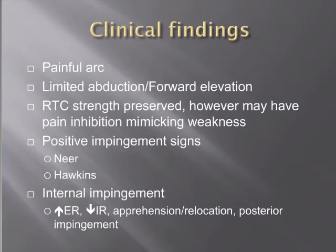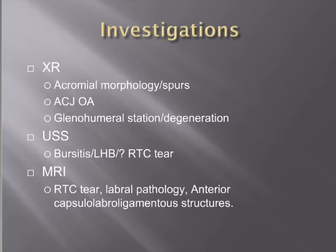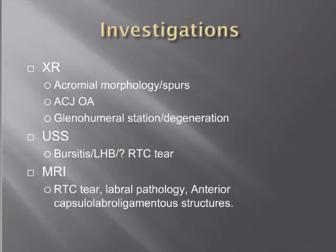For investigations, we start with plain x-rays looking at acromial morphology, degenerative change in the AC joint, and any spurs contributing to subacromial impingement. It is always good to assess the glenohumeral joint to exclude primary glenohumeral pathology. Ultrasound is reasonable to confirm there is no rotator cuff tear; the most common finding is simply subacromial bursitis. An MRI is sometimes appropriate, especially in a younger age group with internal impingement pathology, to assess anterior capsulolabral ligamentous structures for integrity.